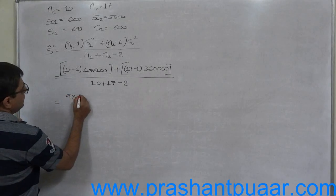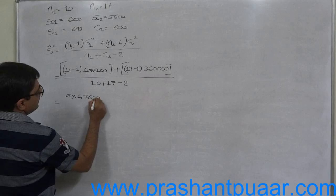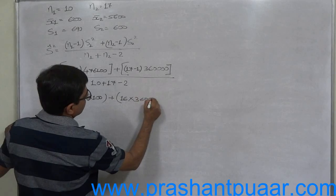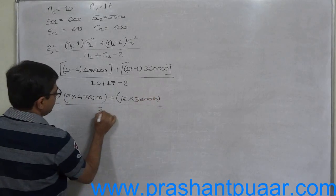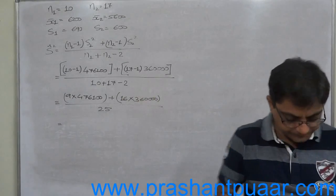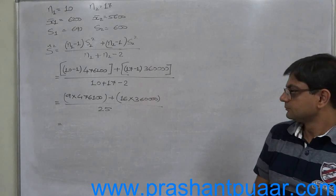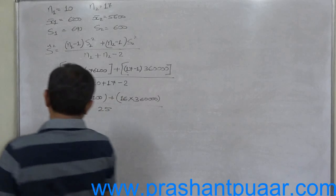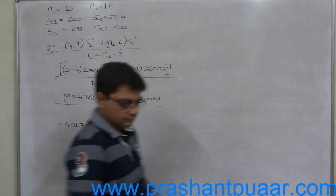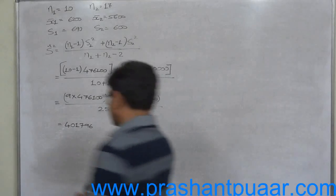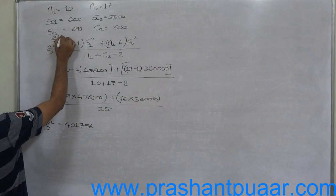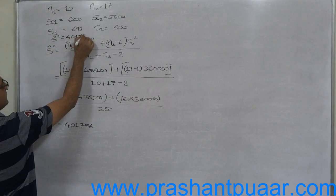9 into 476,100 plus 16 into 360,000 all divided by 25. The value is 401,796. So S cap square is 401,796.